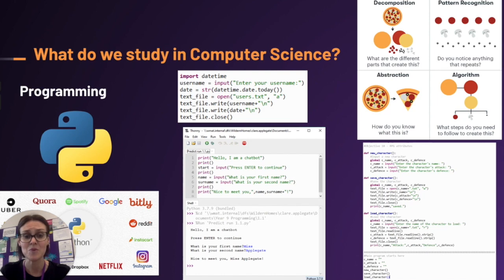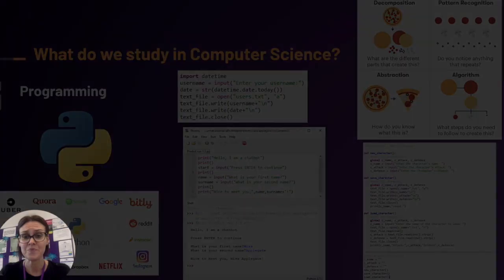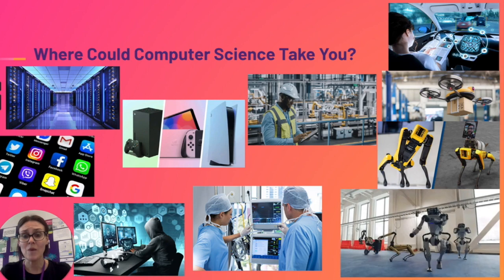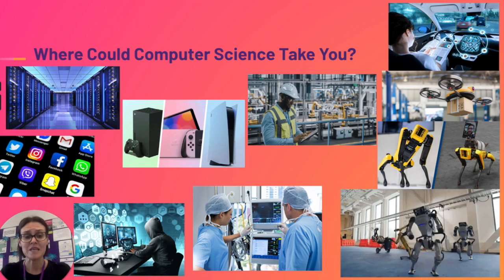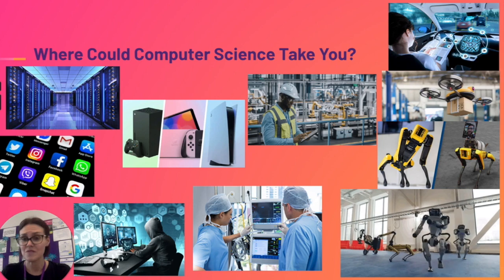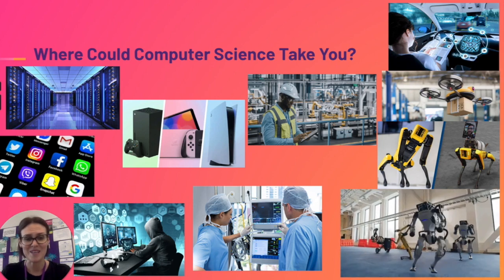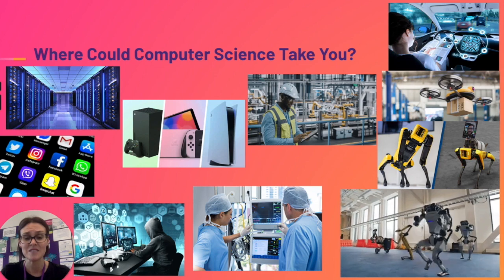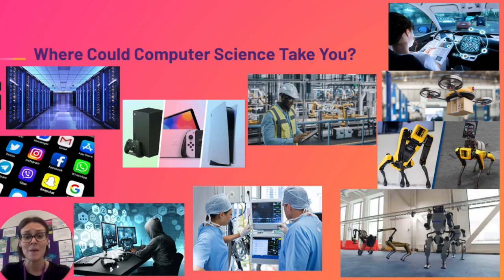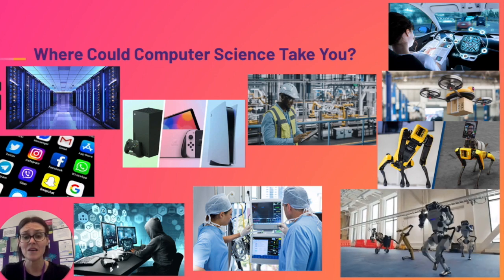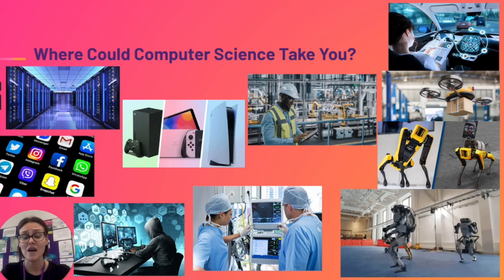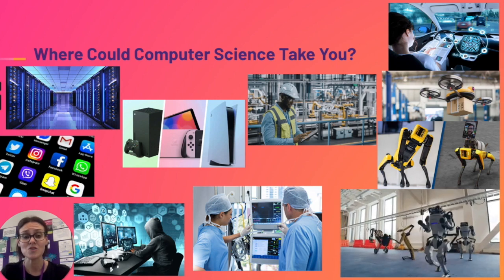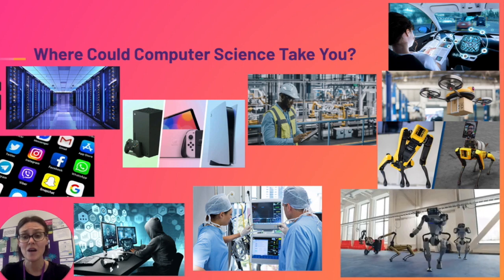Here are some examples on screen of where Computer Science could possibly take you. There are lots of different jobs—you might be focused on the dancing robots, so it could be robotics; data analysis; games designer; web developer; any kind of engineer such as software engineer, network engineer, hardware